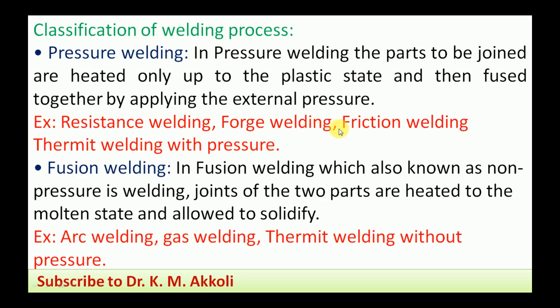In pressure welding, external pressure is applied and the metal pieces are joined by using it. In pressure welding, the metal piece is heated up to the plastic state only — not melted to a molten state. The plastic state means the material can elongate and be stretched. When pressure is applied over the material in this plastic state, that can bend and join. Only up to the plastic state is it heated, and then pressure is applied to form the joining of the two metals. That is called pressure welding.